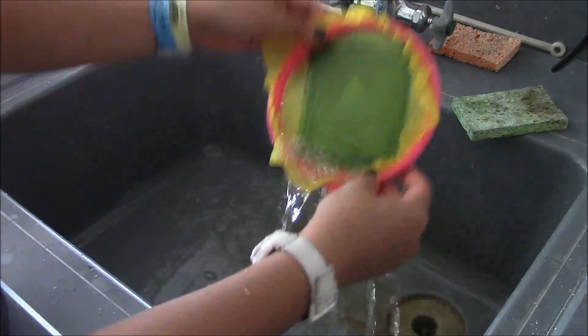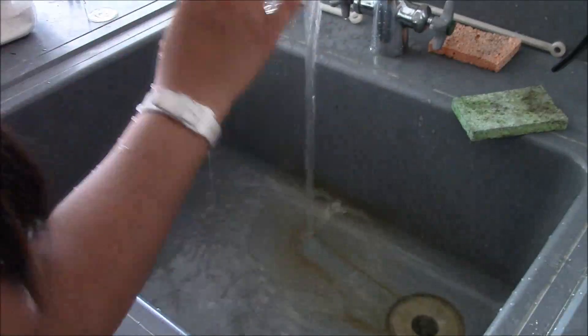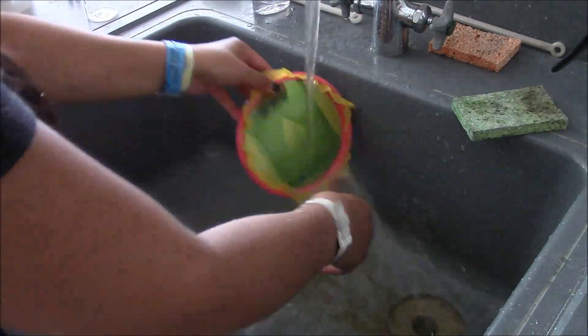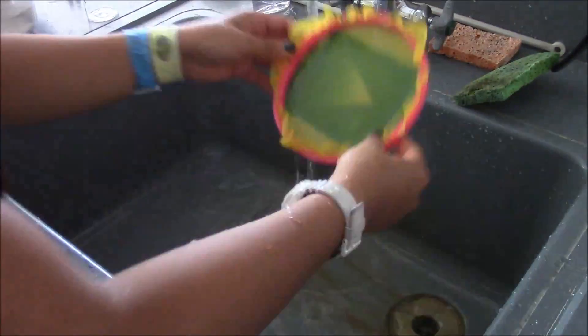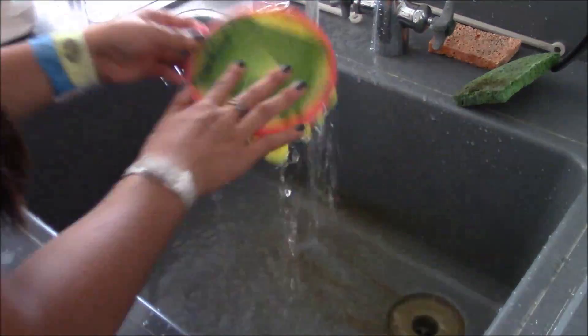Wash out the screen with cold water. The emulsion exposed to the light should have hardened and will not wash out. The emulsion that was covered up by the ink from the transparency, however, should start to turn gummy and slowly wash out.